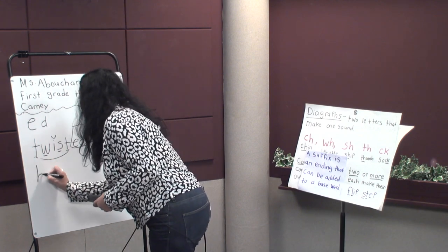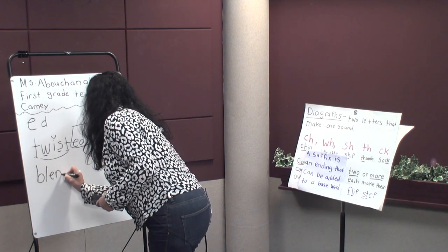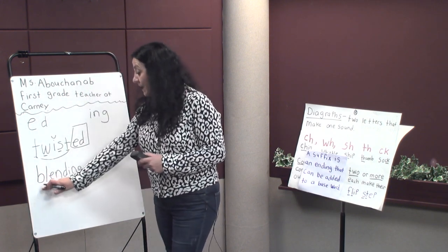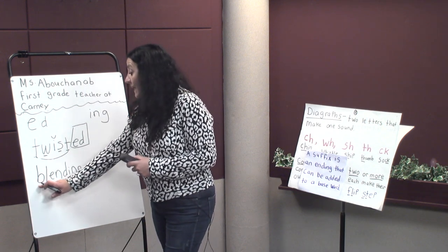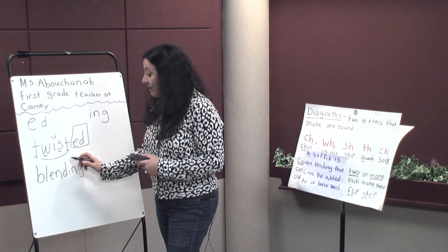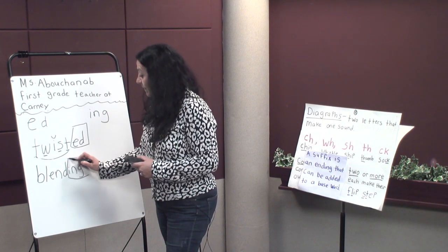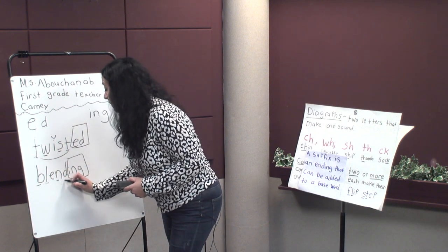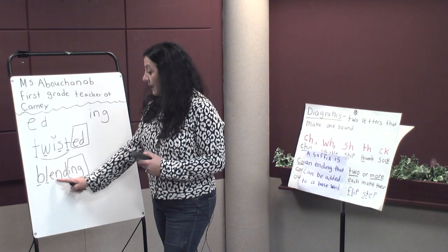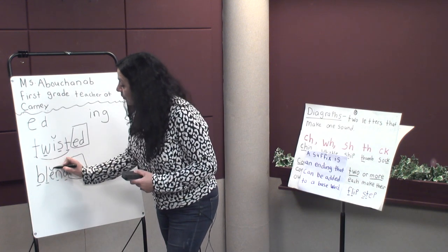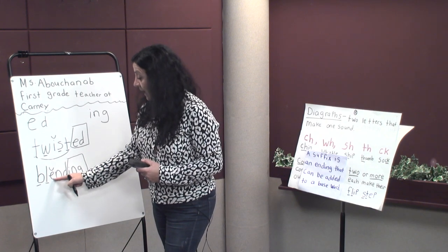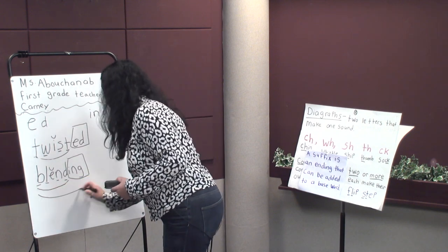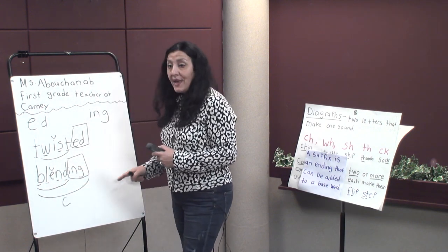The next word we're going to write is blending. If my kids were in the classroom they would have whiteboards and would be writing these words as I say them. They will be able to tell me that the word blending has the suffix -ing at the end. They will underline the consonant blends bl- and -nd, put a little breve on top to show the short e sound, point out where the base word is, and note that it's a closed syllable word. Blending.